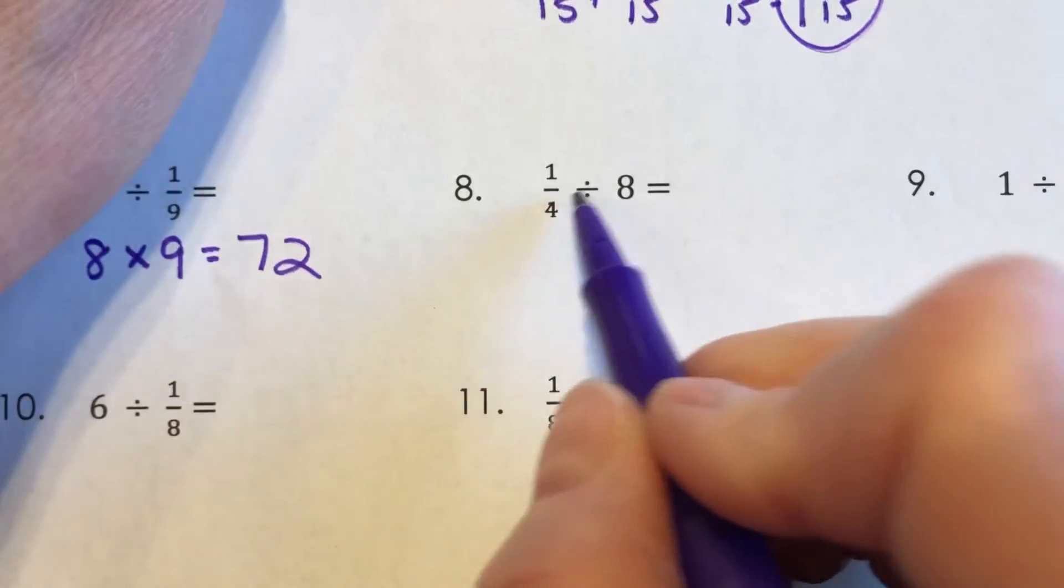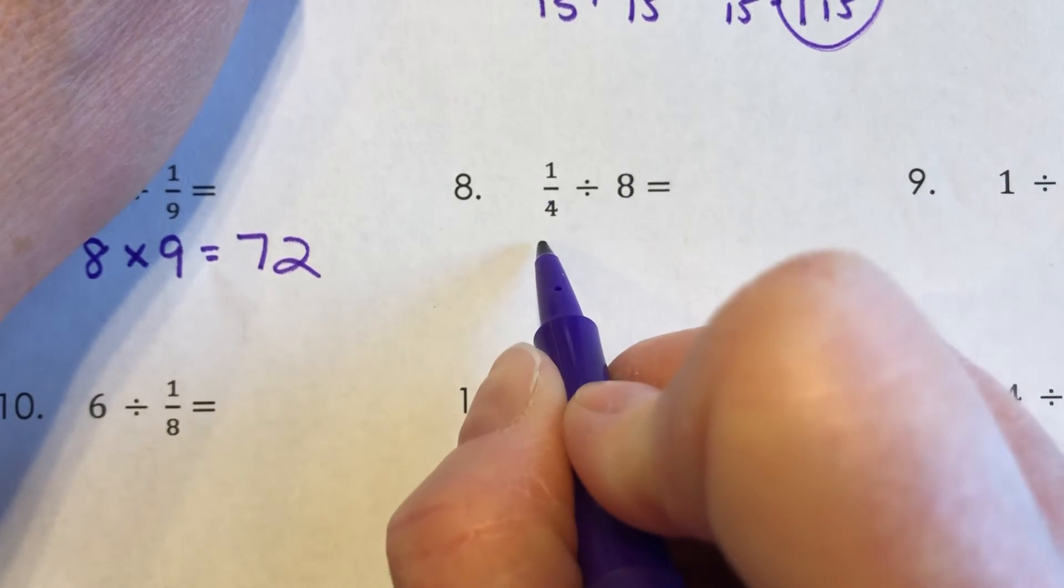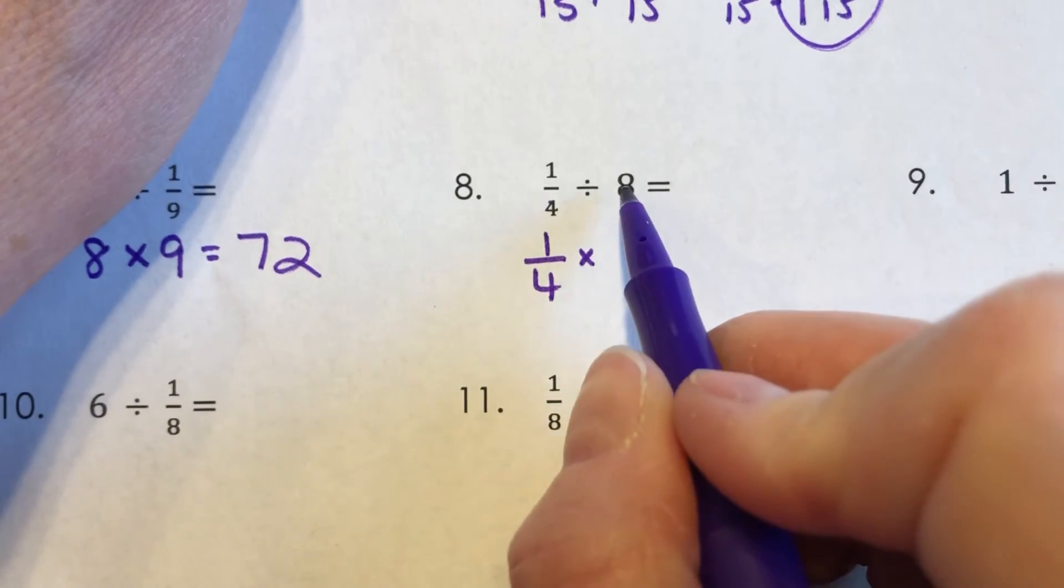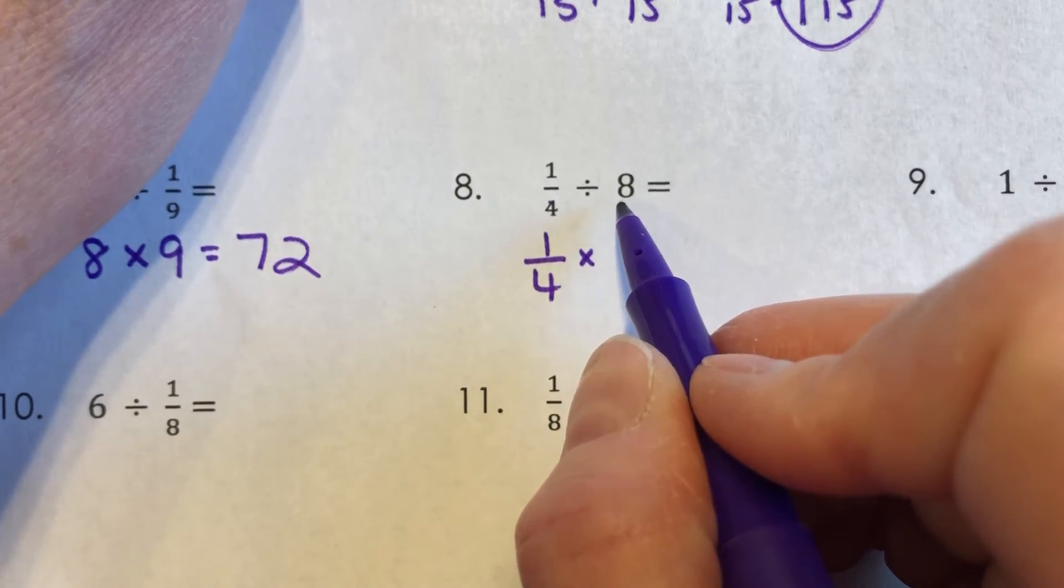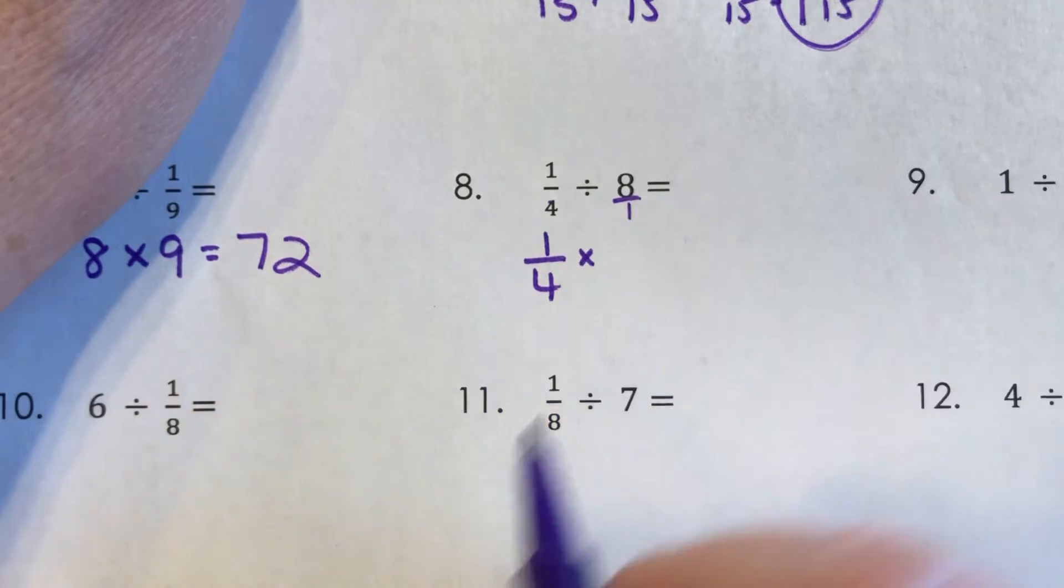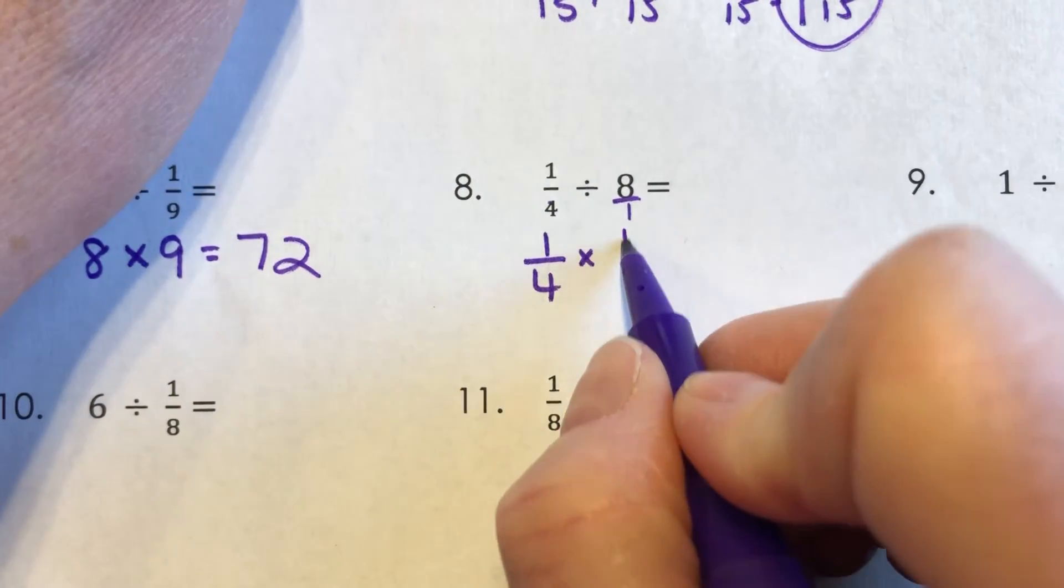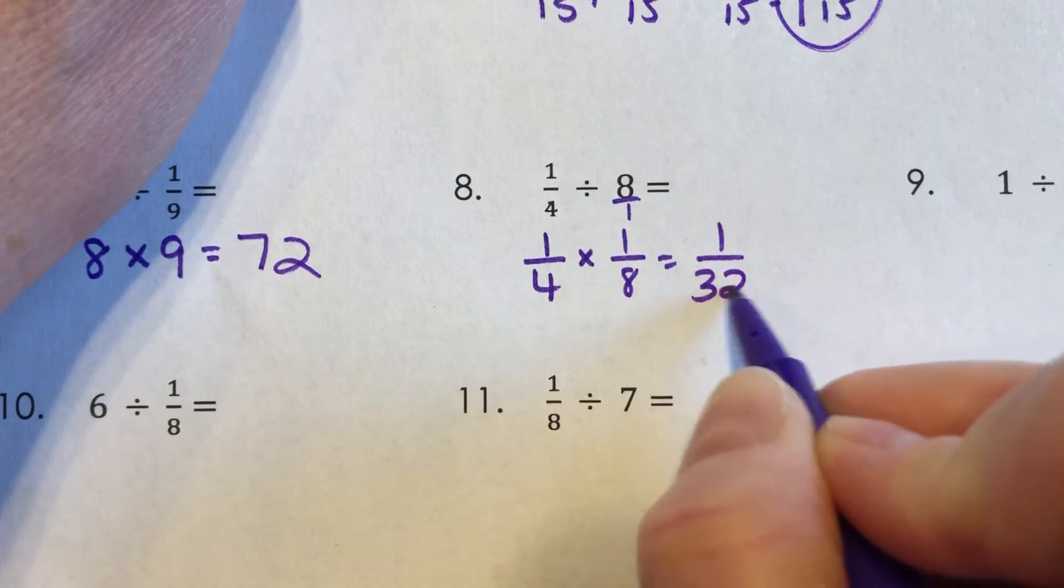For number eight, I have one fourth divided by eight. So with this one, I can solve this as one fourth times the reciprocal of eight. And you might be thinking, wait a minute, the reciprocal means I'm supposed to switch the numerator and denominator. And this one doesn't have a denominator. Yes, it does. Eight is the same as eight over one. So I would multiply one fourth by one eighth and get one over 32.